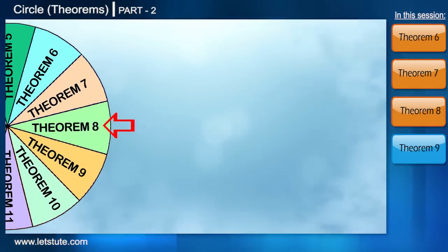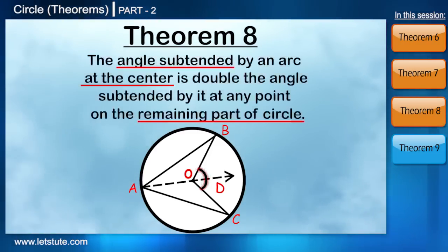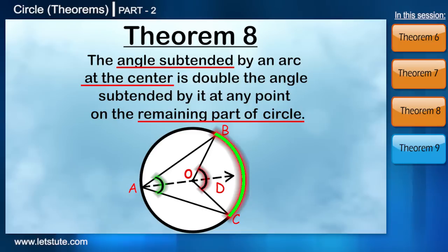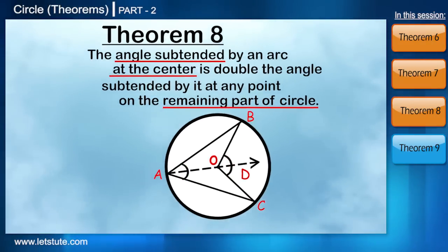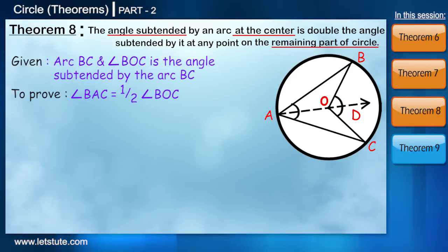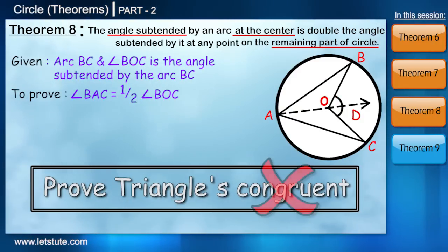Let's have a look at the next theorem. The angle subtended by an arc at the center is double the angle subtended by it at any point on the remaining part of the circle. I'm going to take this one a little slow and I want you to concentrate a little extra on this one. We have to prove that angle BAC is equal to half of angle BOC. This is a little tricky one but it is not difficult.